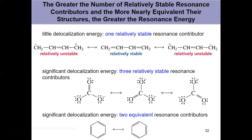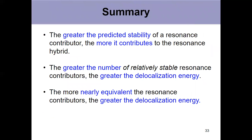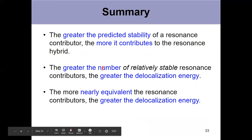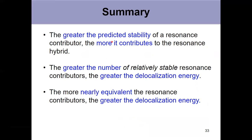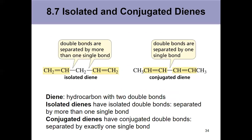We see the stability is just as important as the number. In summary: the greater the predicted stability of a resonance contributor, the more it contributes to the hybrid. The greater the number of stable resonance contributors, the greater the delocalization energy. And the more equivalent those contributors are in energy, the greater the delocalization energy. So let's parlay that to look at the extra stability a molecule gets from having delocalized electrons by examining isolated and conjugated dienes.